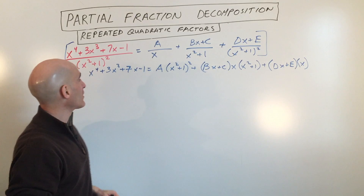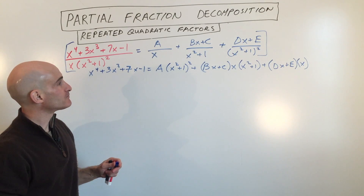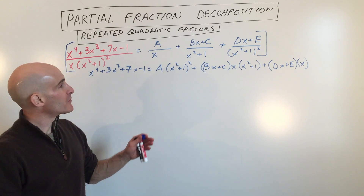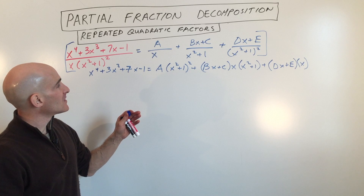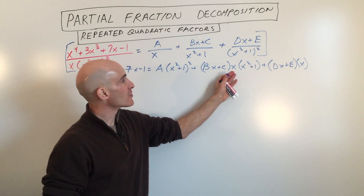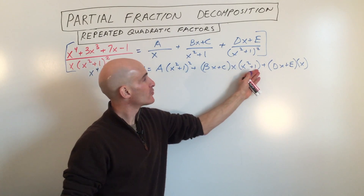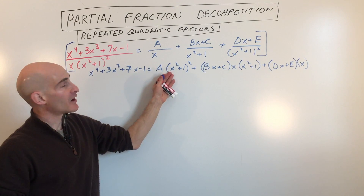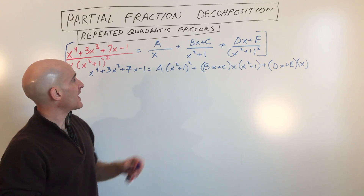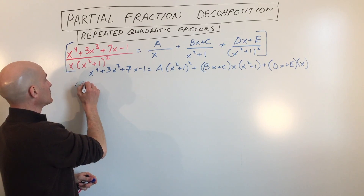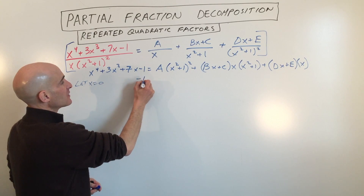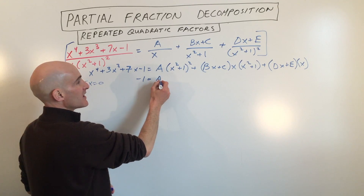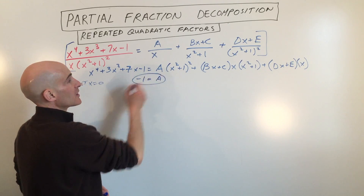This is quite a large equation, so we're going to be strategic and pick some values. For example, let x = 0. That cancels out the second and third groups, allowing us to solve for A. So if x = 0, we get −1 = (0² + 1)² · A, which means A = −1.